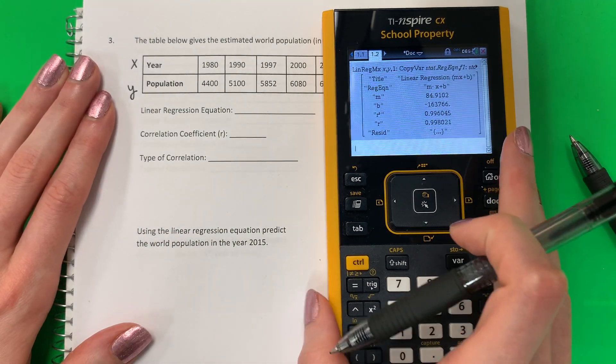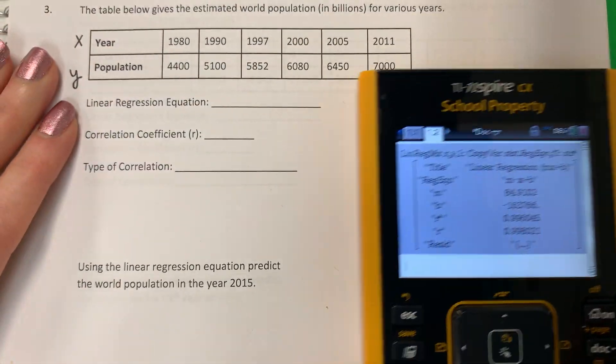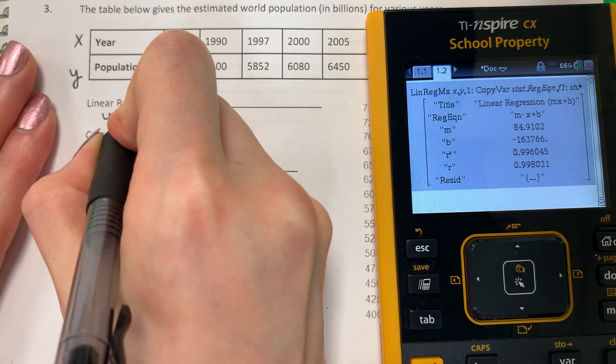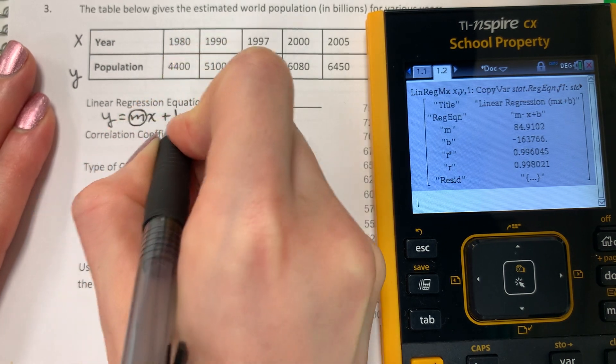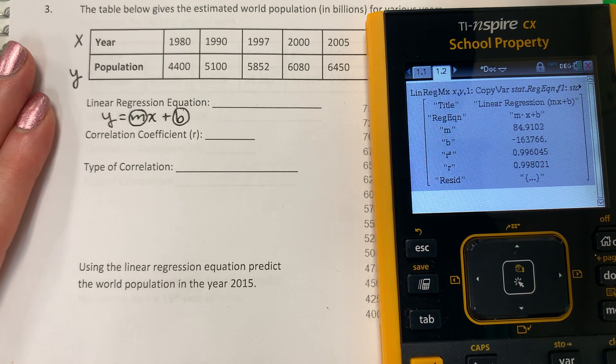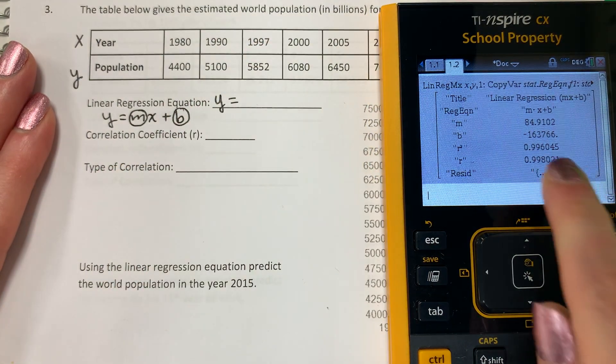So now we're going to do our equation first. So let me go ahead and zoom in here. Our linear regression equation, it will be in the form Y equals MX plus B, slope intercept form. M and B are numbers. Y and X are letters. So Y equals, what is M? ¿Cuál es M?